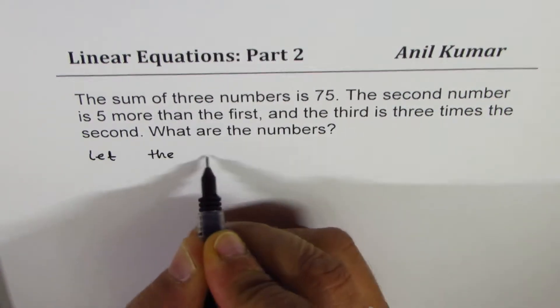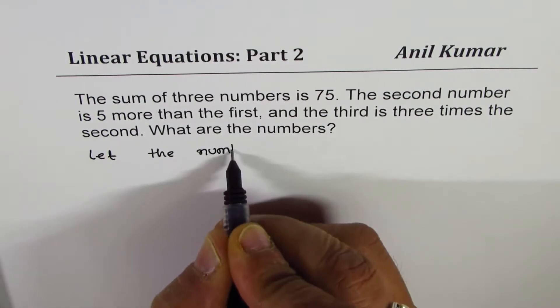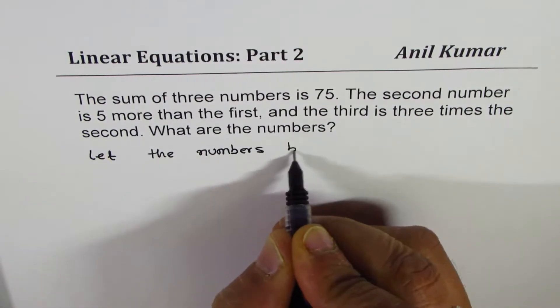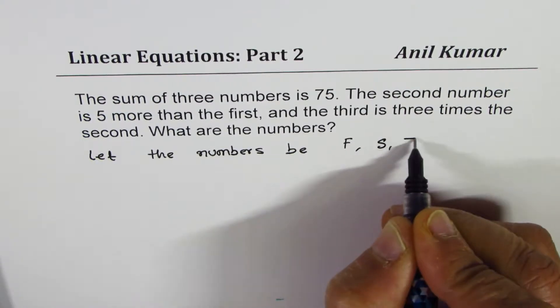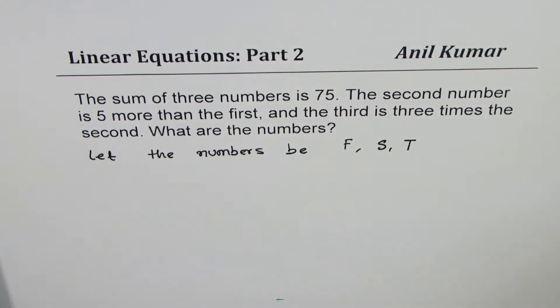Let the numbers be: first F, second S, and third T. It's always good to give a meaningful variable. It could be lowercase or uppercase. In such cases I prefer uppercase.